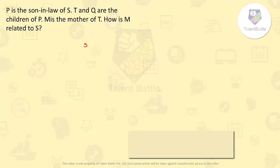I will draw S over here. S will have one daughter — since she is a daughter, I am using the notation of a circle. P is the husband of her because P is son-in-law of S — son-in-law means daughter's husband — so I will draw two lines here. T and Q are children of P, so they are also children of the daughter of S since they are husband and wife. M is the mother of T, so as P is the father, M is the mother. That means M and P are husband and wife.